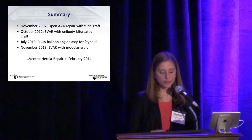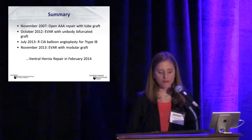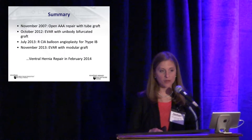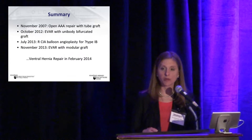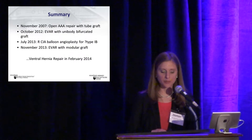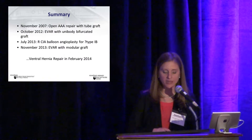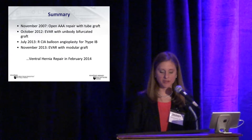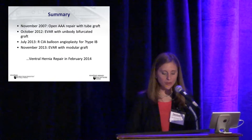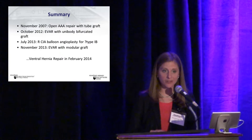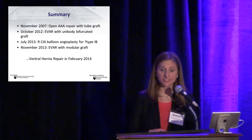In summary, the patient underwent open AAA repair in 2007 with a Dacron tube graft. He presented five years later with a distal anastomotic pseudoaneurysm and underwent relining with an aortoiliac unibody stent graft with initial success, but subsequent imaging showed recurrence of the pseudoaneurysm. Initially thought to be a type 1b endoleak, he underwent balloon angioplasty of the right iliac extension. After diagnostic studies confirming a type 3b endoleak, his entire infrarenal aorta and bilateral common iliac arteries were relined. In February of 2014, only after confirmation of obliteration of the endoleak, the patient finally underwent repair of his symptomatic incisional hernia.